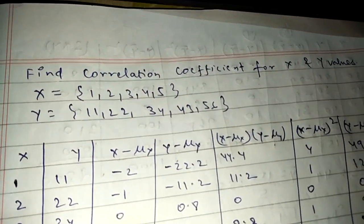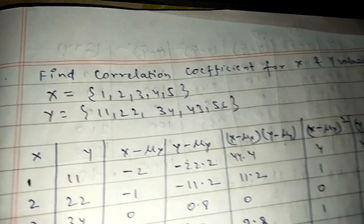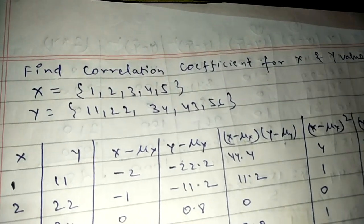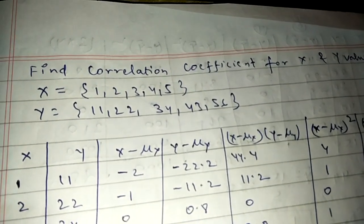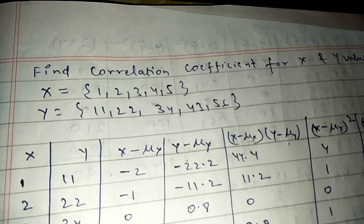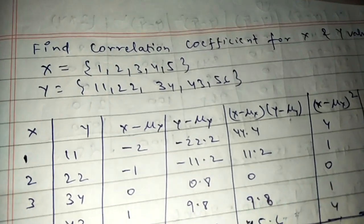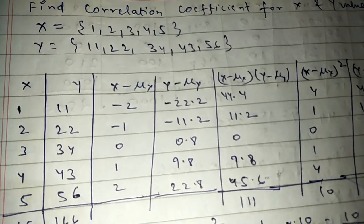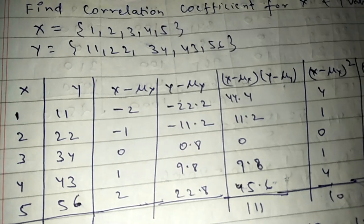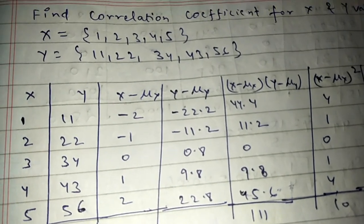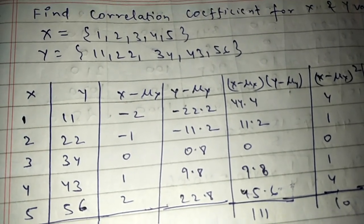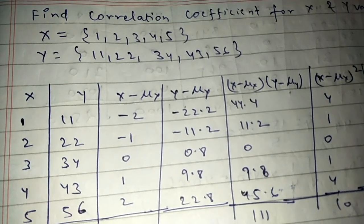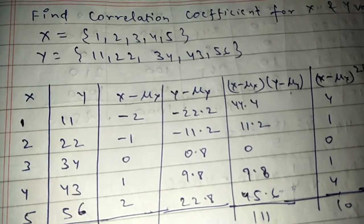Find the correlation coefficient for x and y values. X is given as 1, 2, 3, 4, 5 and y is given as 11, 22, 34, 43, and 56. First of all, construct a table like this: x will be 1, 2, 3, 4, 5 and y will be 11, 22, 34, 43, 56, which are given in the question.